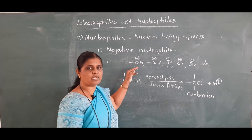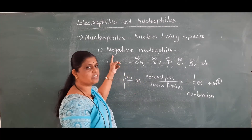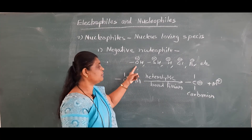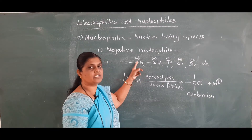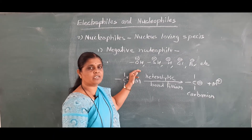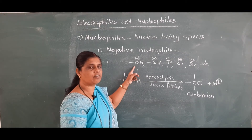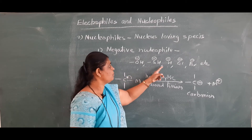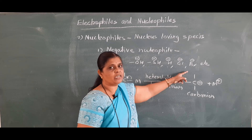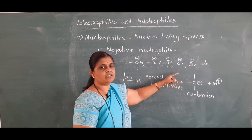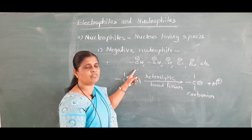Nucleophiles are of two types. Negative nucleophiles are the atoms or groups carrying negative charge. Such atoms or groups are known as negative nucleophiles. For example, hydroxide ion, thioalcoholic group, hydride ion which is hydrogen carrying negative charge, chloride ion, bromide ion, etc. That is, atoms or groups carrying negative charge — such species are known as negative nucleophiles.